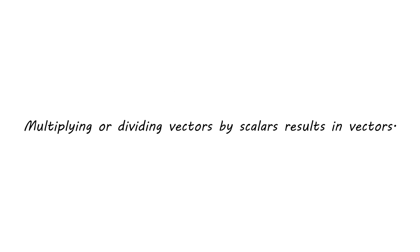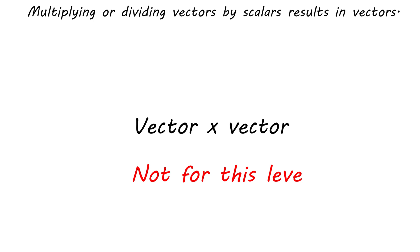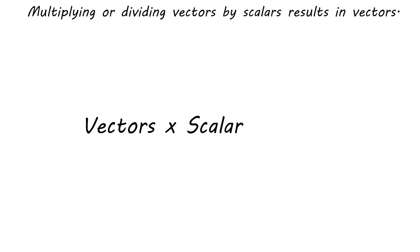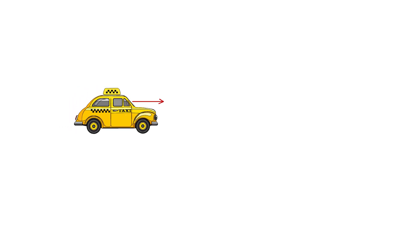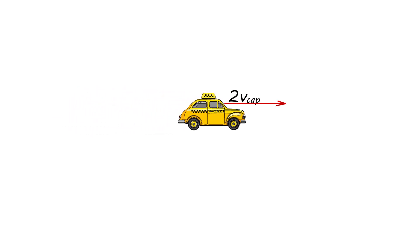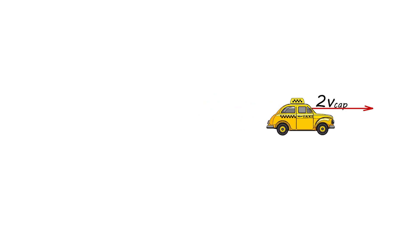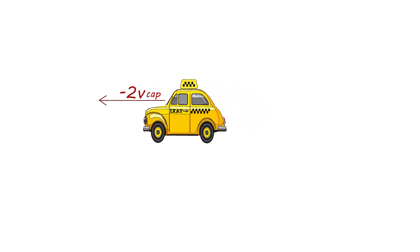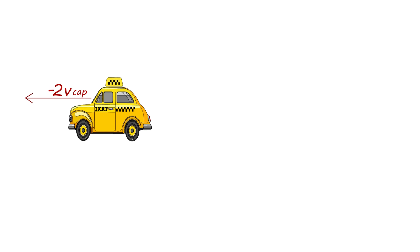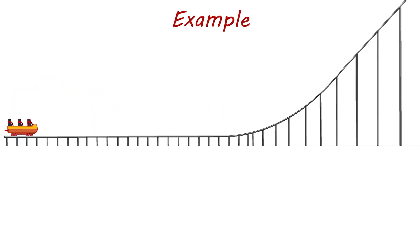Multiplying or dividing vectors by scalars results in vectors. We will study vectors multiplied by scalars. For example, if a cab driver is told to go twice as fast, the cab's original velocity vector v-cab is multiplied by the scalar number 2. The result, written 2v-cab, is a vector with magnitude twice that of the original, pointing in the same direction. If another cab driver is told to go twice as fast in the opposite direction, this is the same as multiplying by negative 2 — the result is a vector with magnitude 2 times the initial velocity but pointing in the opposite direction, written as minus 2v-cab.